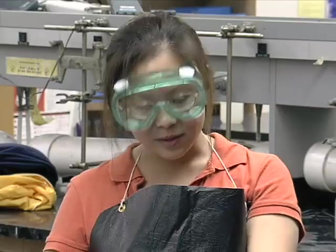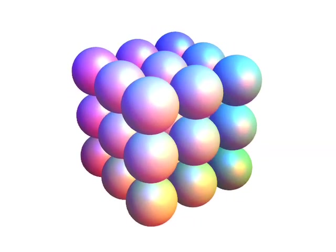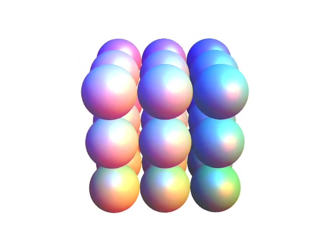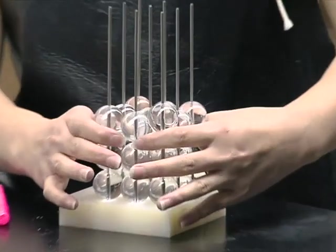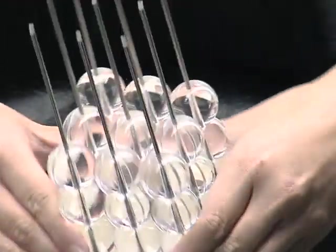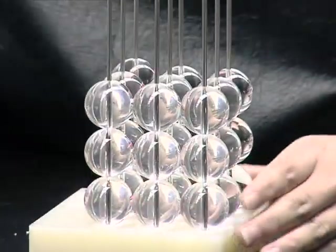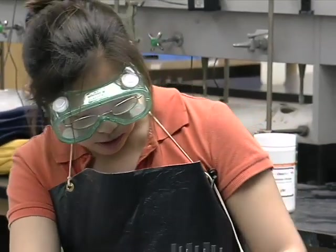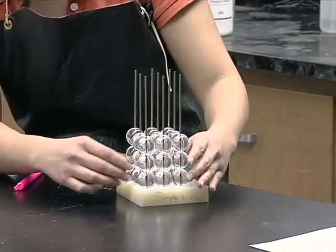Now we'll examine different kinds of structures. Seen here is a simple cubic structure, and it is comprised of successive square arrays placed directly on top of each other. The coordination number for this structure is 6.